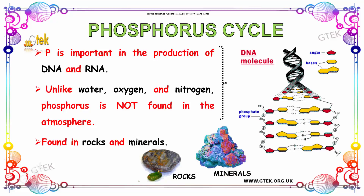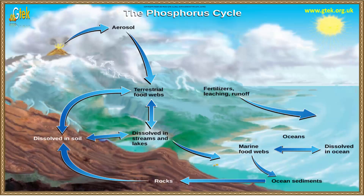Now let's see about the phosphorus cycle. From the volcano, aerosol is emitted. Following this, aerosol is deposited in terrestrial and aquatic food webs. From there, the aerosol dissolves into soils, streams, and lakes — you can see a small cycle here. It then sediments into ocean sediment, which goes back to rocks, and also dissolves in soil. You can see these second small cycles — together these are called the phosphorus cycle.